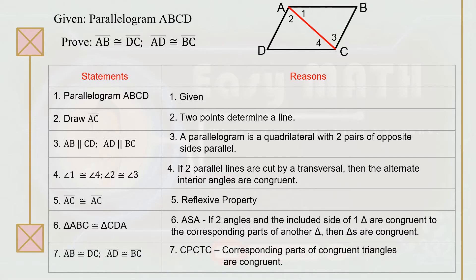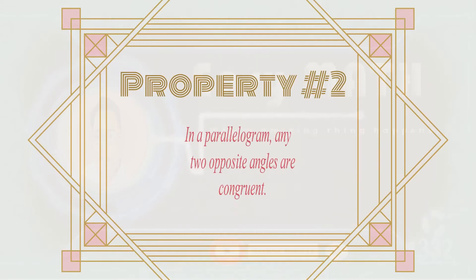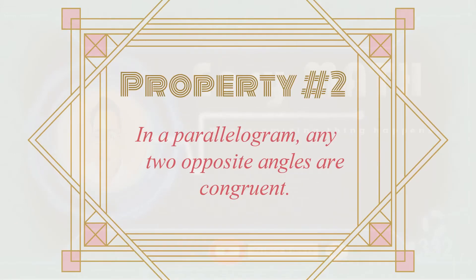Therefore, segment AB is congruent to segment DC, and segment AD is congruent to segment BC, because of CPCTC — the corresponding parts of congruent triangles are congruent. Property number two: in a parallelogram, any two opposite angles are congruent.